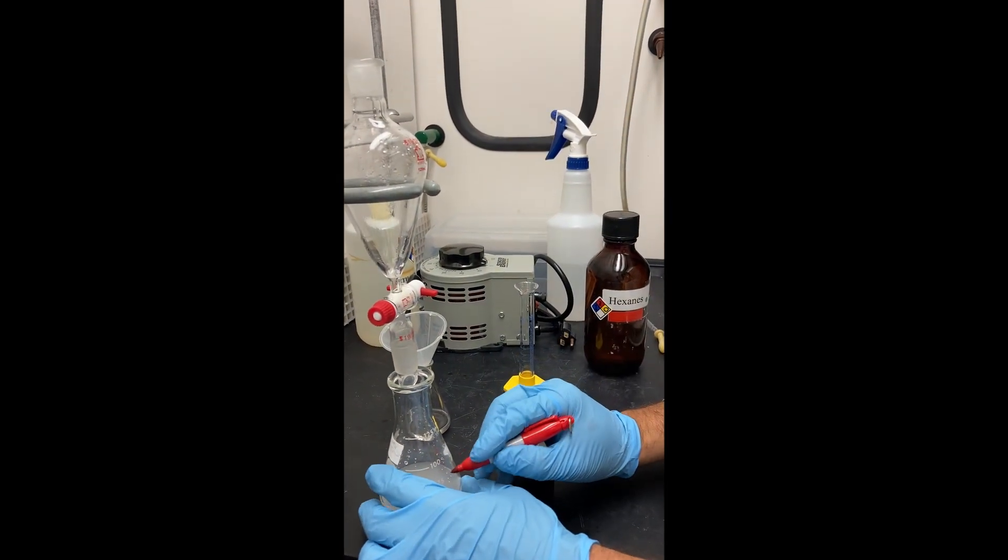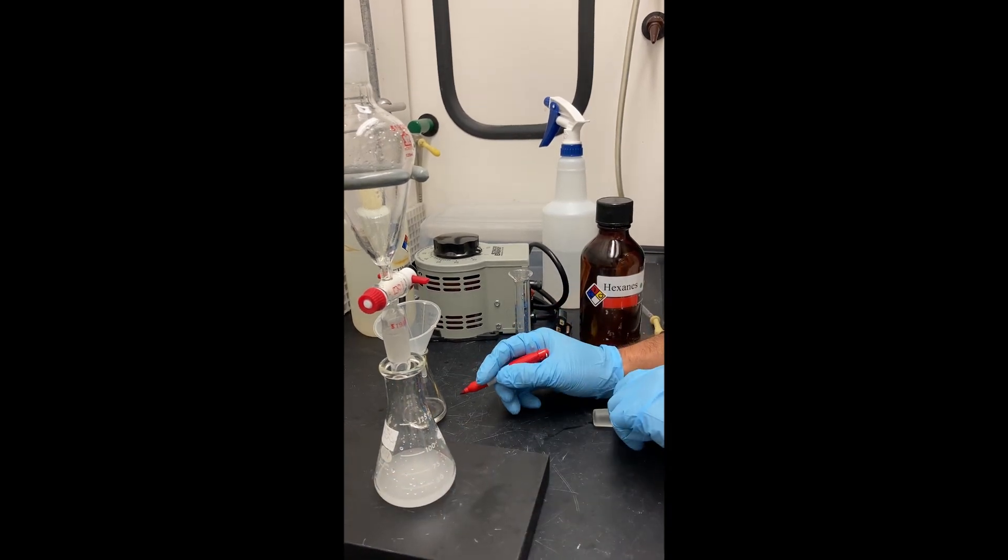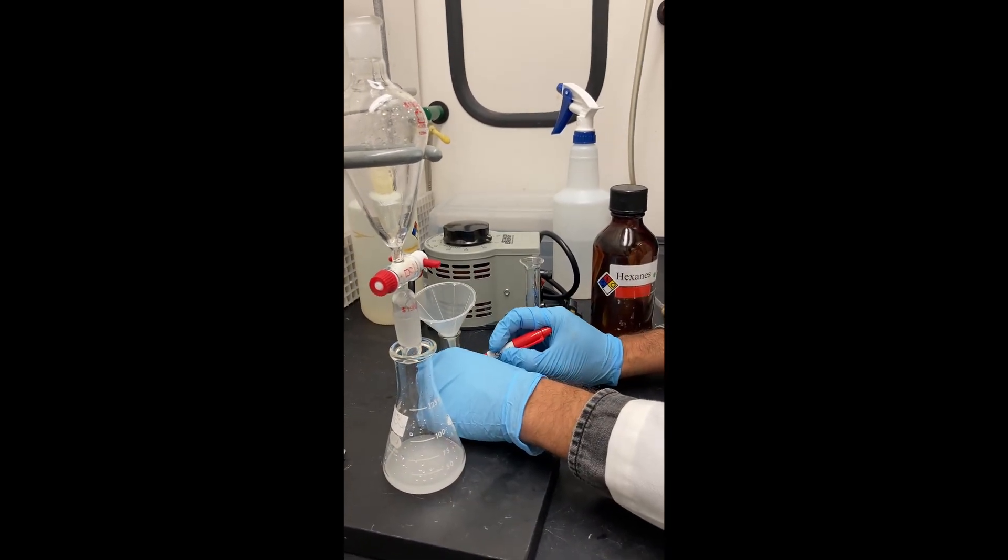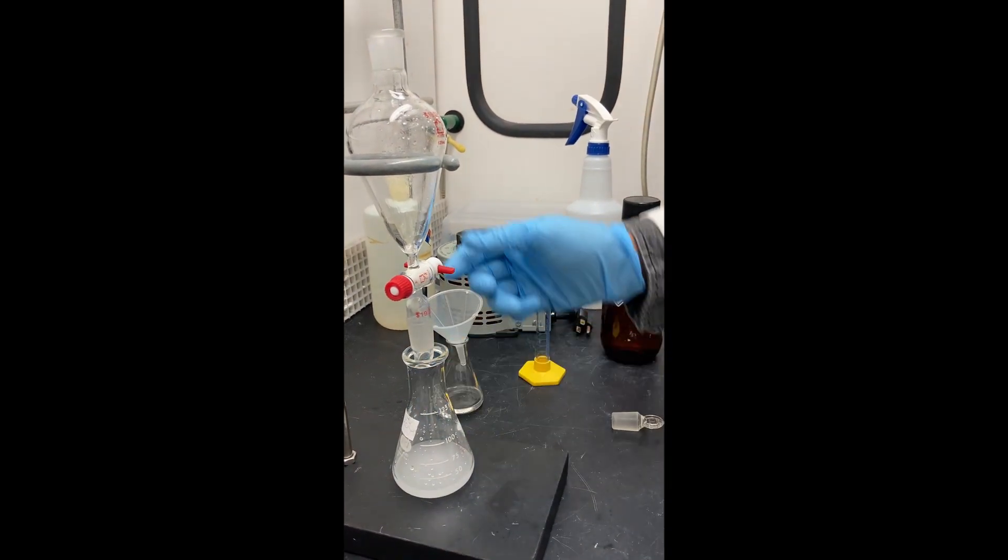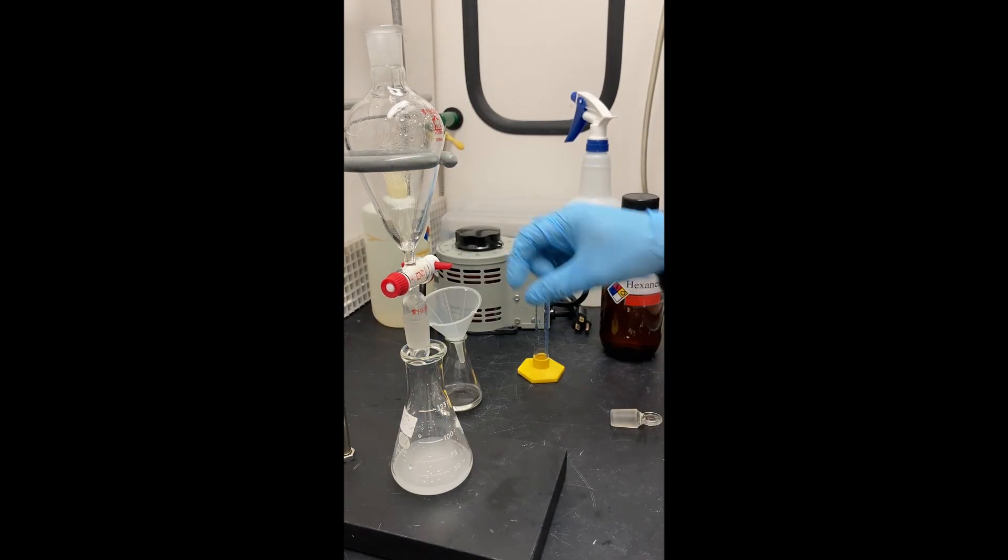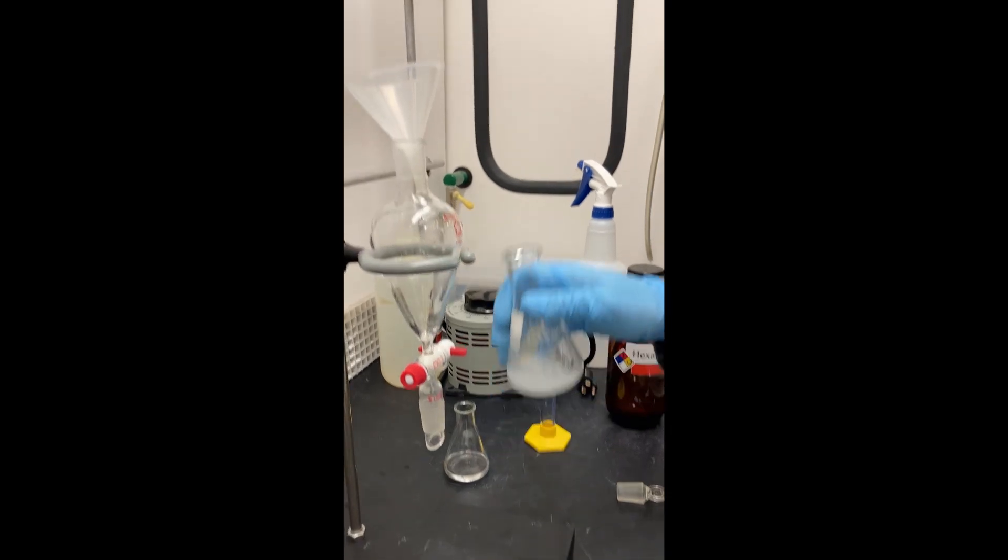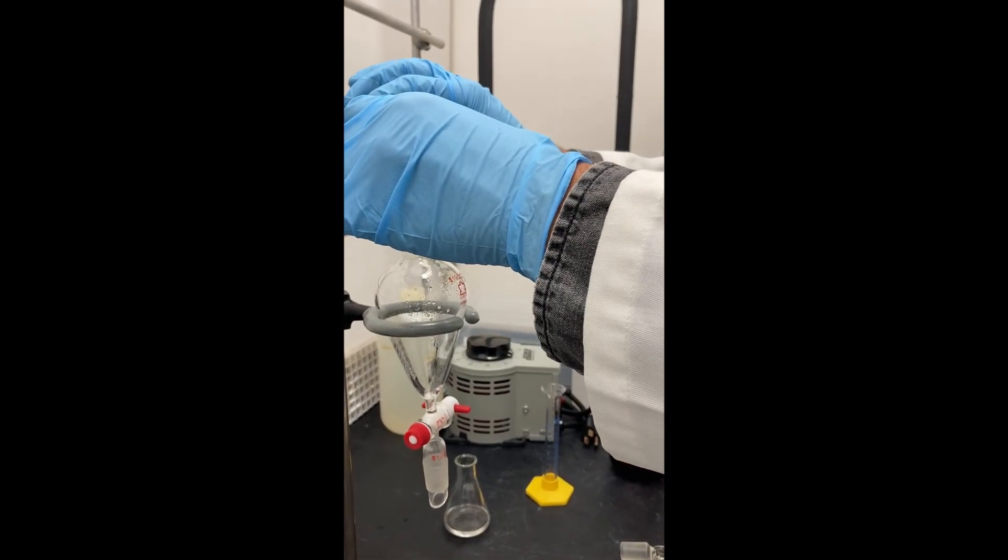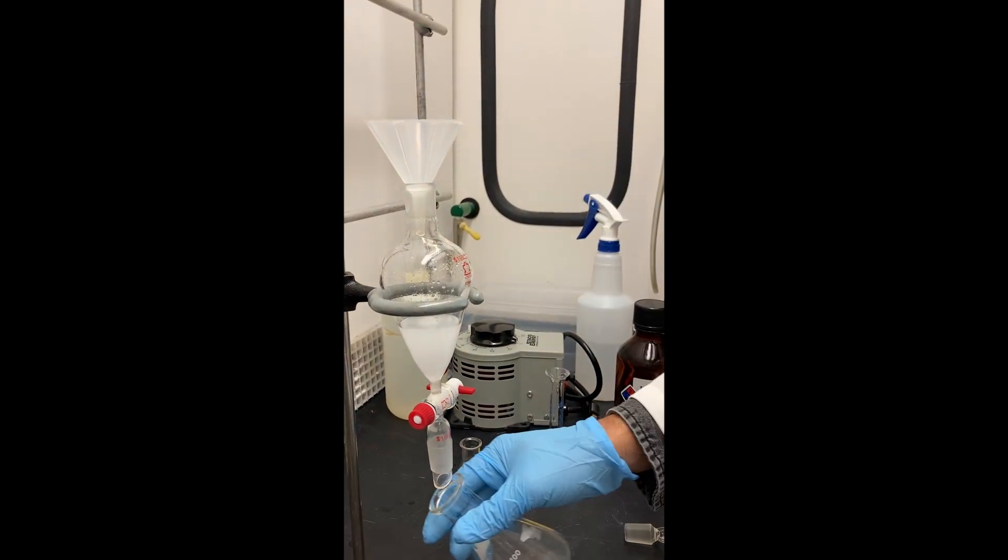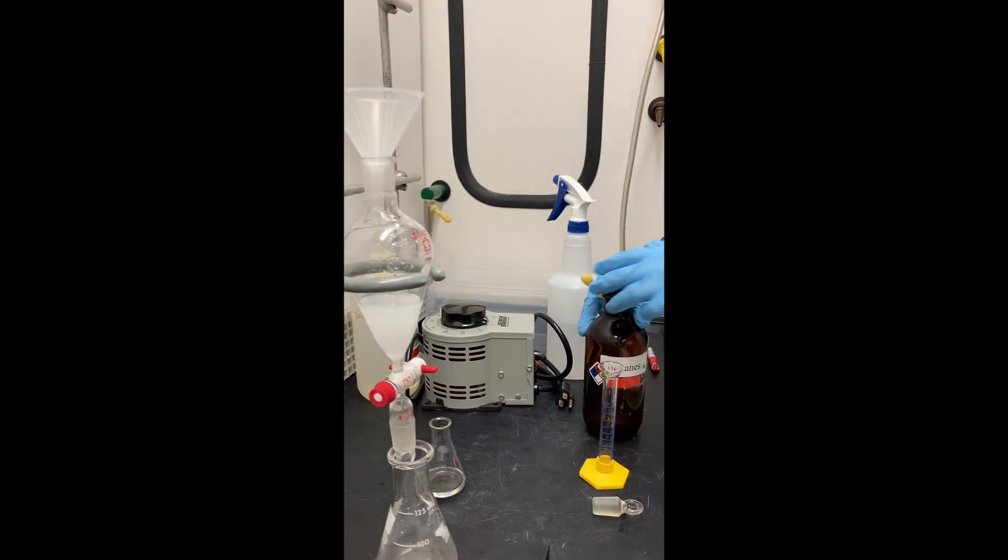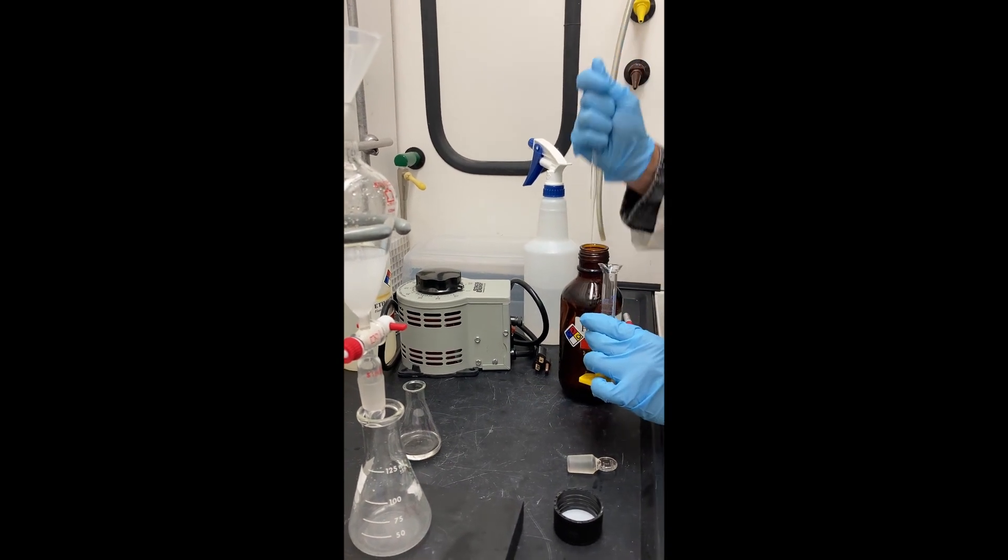During separations, labeling your glassware is highly recommended. Since there is still oil in the aqueous layer, we're going to want to extract from the aqueous layer a second time. You'll measure out another 10 milliliters of hexanes and then add that to the separatory funnel for your second extraction.